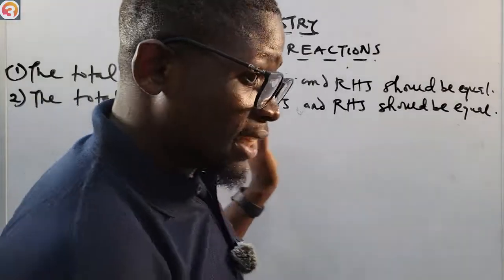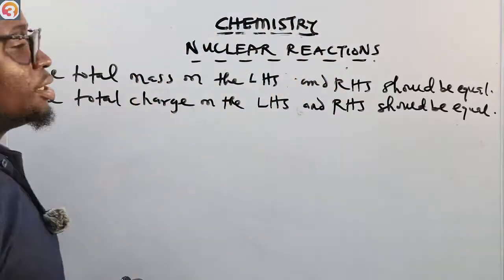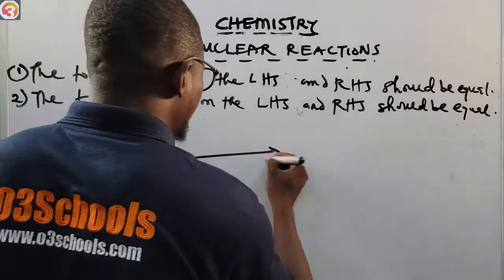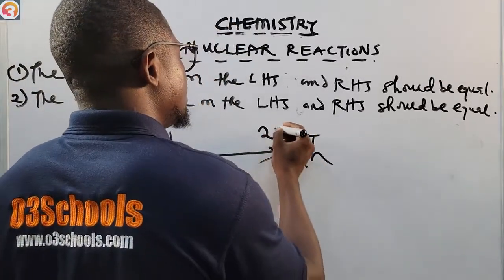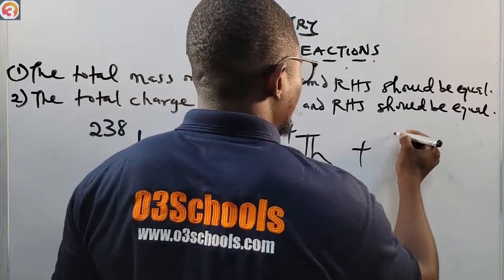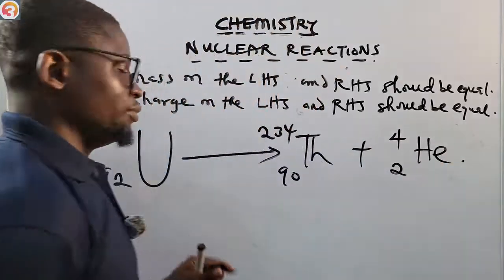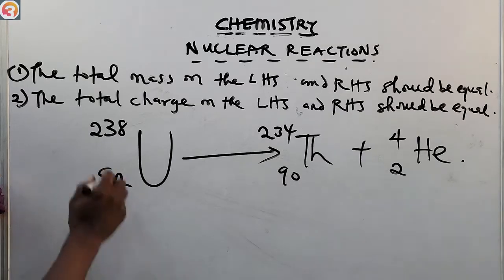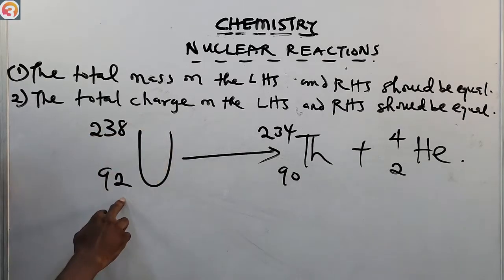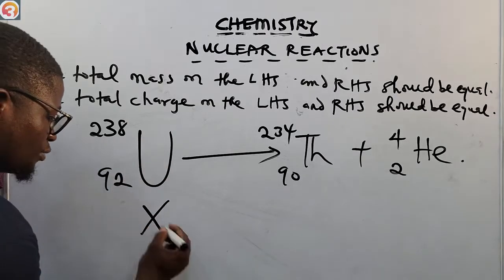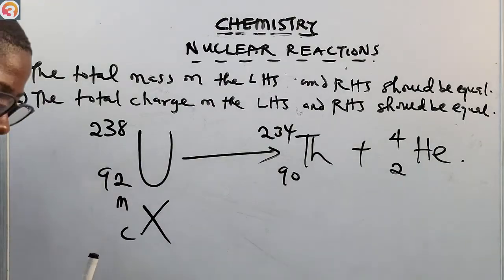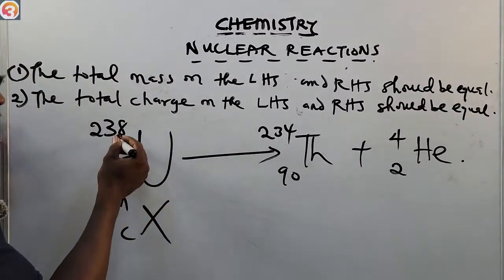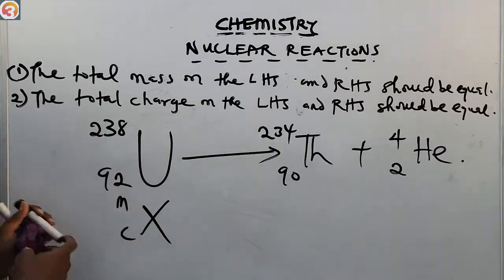Let us see an example. If you have uranium-238 (92) giving thorium-234 (90) plus an alpha particle — helium-4 (2). Remember: M is the nuclear mass at the top, and C is the charge at the bottom. So for uranium, M = 238 and C = 92. This is the left-hand side; the right-hand side has thorium plus helium.